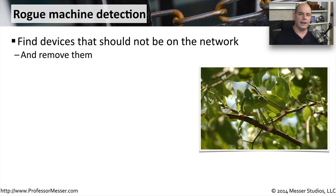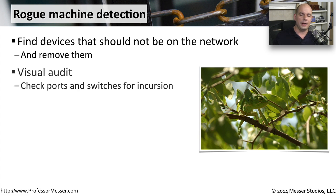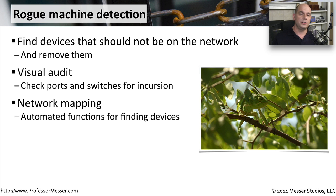It may be easy to find unauthorized devices on a wired network, but on a wireless network it becomes a lot harder to find rogue devices. You want to perform audits, physically check your switches, and look at the list of who might be connected to your wireless network. It's not uncommon to use network mapping software to find everybody connected, and then compare that list to who is actually authorized to be on the network.